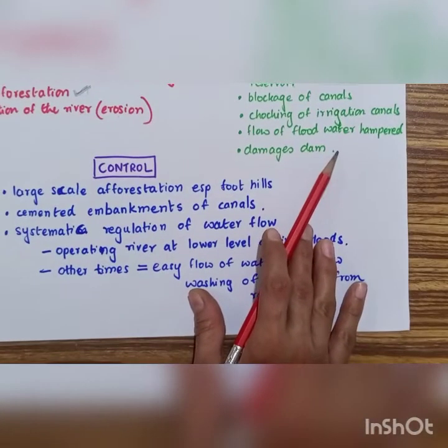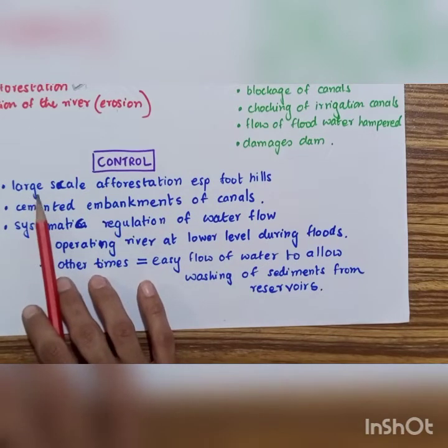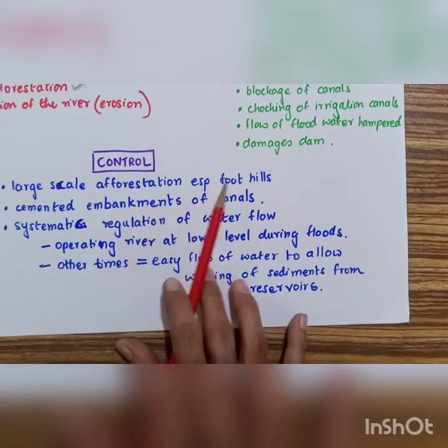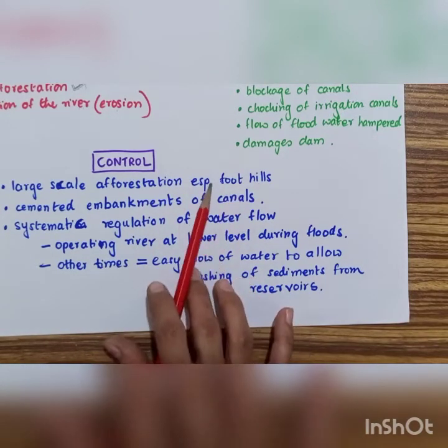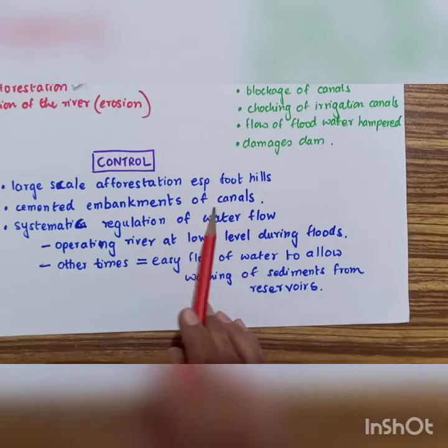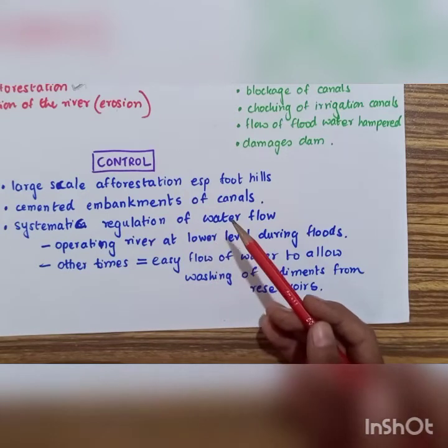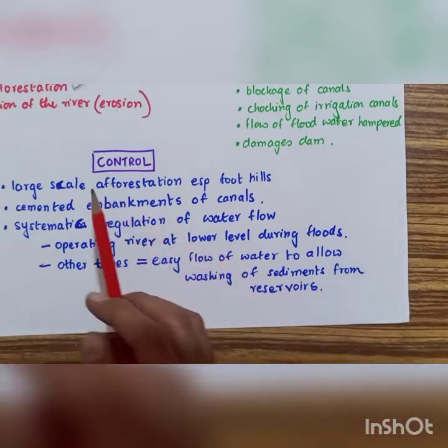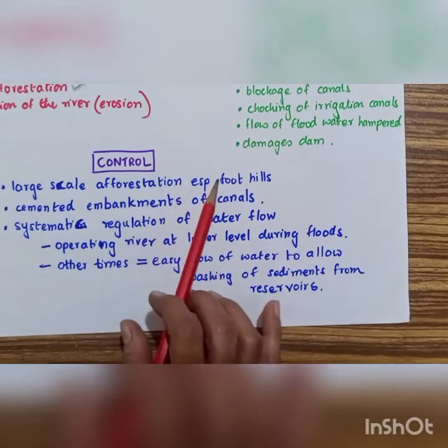Now, what can be done? Is there a way of controlling the situation? Yes. If we start off with large scale afforestation, meaning planting trees, especially at the foothills of the mountains. Why especially at the foothills of the mountains? Because we want to stop the problem from where it's originating, from where it's starting off. It's starting at the base of the mountains, from where the river flows with full speed. At that time, the main activity that the river is performing is erosion. So you have to control it then and there itself.